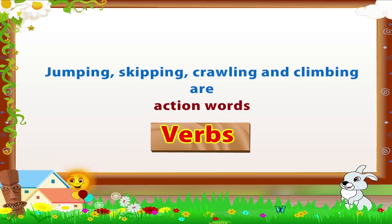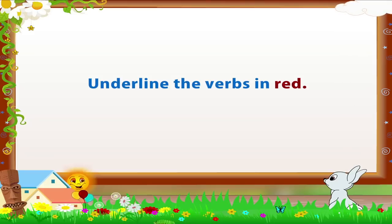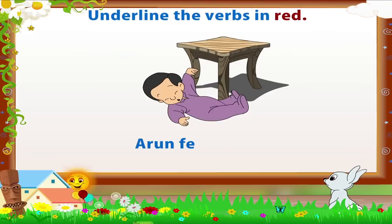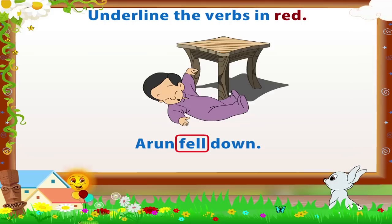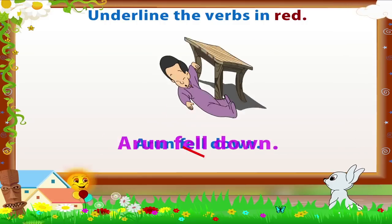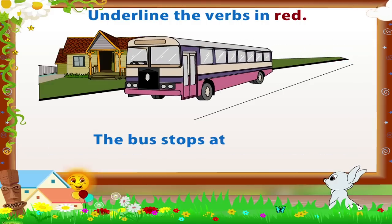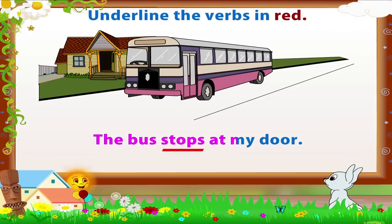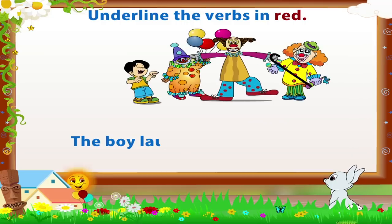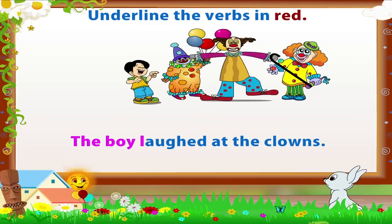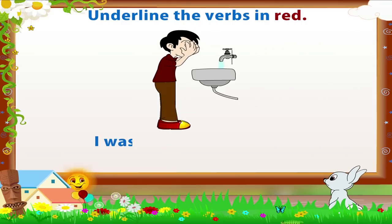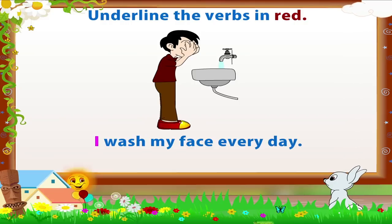Jumping, skipping, crawling, and climbing are action words called verbs. Very good, you do remember! Here are some sentences. Let us underline the verbs in red. 'Arun fell down' — what happened to Arun? Yes, he fell. 'Fell' is the verb. 'The bus stops at my door.' 'The boy laughed at the clowns.' 'I wash my face every day.'